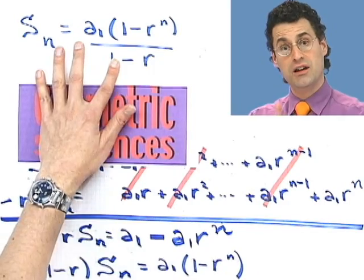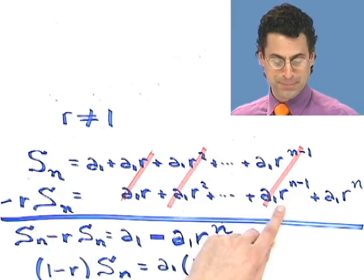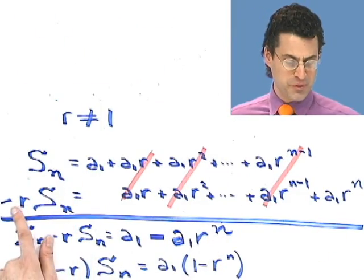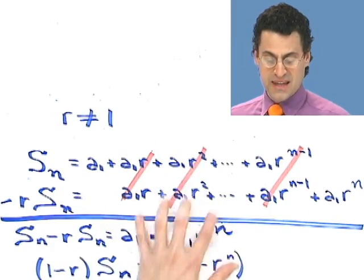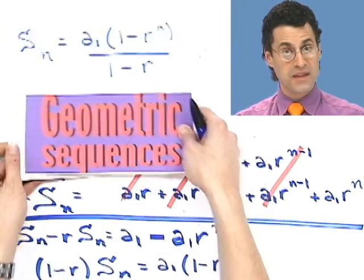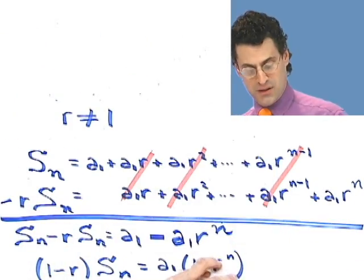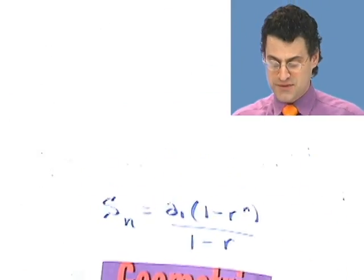Let's take a look at an example. Quite frankly, I don't memorize this formula. I swear I do not memorize it. All I do is memorize this trick: I write out the terms, multiply by r, see everything cancel when I subtract, and always re-derive it. That's what I do. But if you can memorize it, that's fine too.